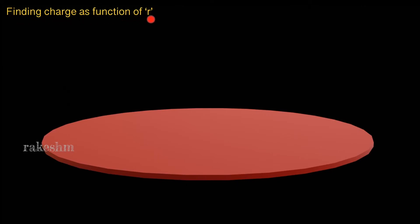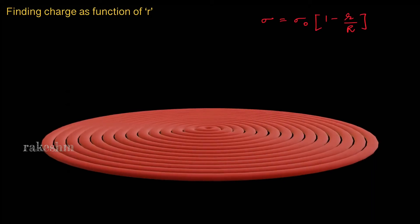Let us find the charge on the disk as a function of small r, where r is the distance from the center of the disk. Since the charge density varies with r and is not constant, we need to integrate. To set up the integration, let us cut the disk into many concentric thin rings. On each ring, the charge density is the same. We will find the charge on one ring and sum up the charges on all the rings.